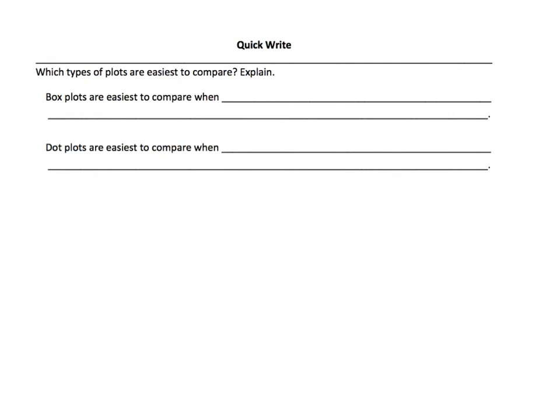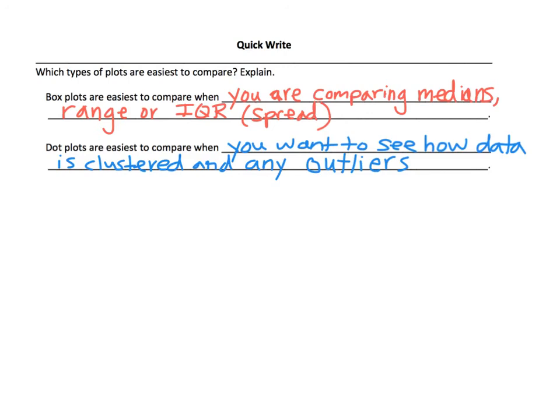Now that we've compared data from both dot plots and box plots, I want you to pause the video and complete this quick write. Which types of plots are easiest to compare? Use these two sentence starters: 'Box plots are easiest to compare when...' and 'Dot plots are easiest to compare when...' Here are the key things for the quick write: box plots are best for comparing medians and looking at range or IQR. Dot plots are best for seeing how individual data is clustered and where any outliers are.